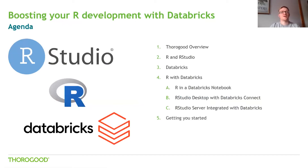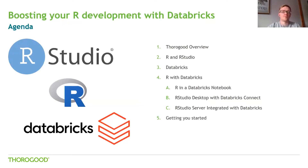In terms of the agenda for the next half an hour, we'll start off with an overview of Thurgood. Then we'll talk about the two components that are part of this pairing: R and RStudio, and then Databricks. Then we'll get into the real meat of the content — how you can amalgamate the two. I'll show three different methods: R in a Databricks notebook, RStudio desktop running off a Databricks cluster using Databricks Connect, and RStudio server integrated with Databricks in a slightly different way. Finally, I'll round off with a few action items you can take to help you get started.